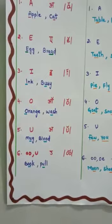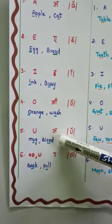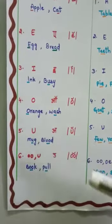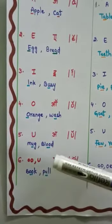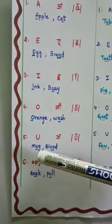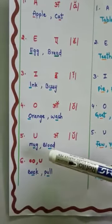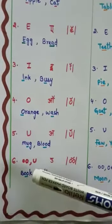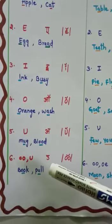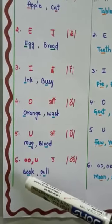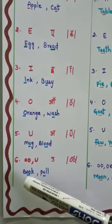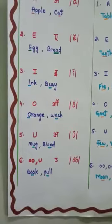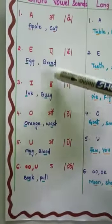Next comes U. U makes the sound /ʌ/. Examples: mug and blood — both have the /ʌ/ sound. Please don't get confused: double O makes the sound /ʊ/, and U also makes the sound /ʊ/ — as in book and pull. Double O and U both make the /ʊ/ sound in book and pull. Understood, children?